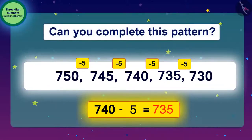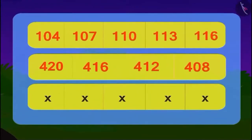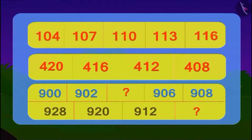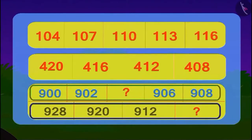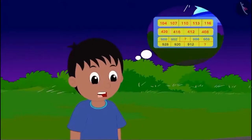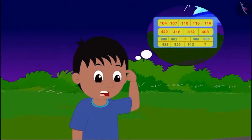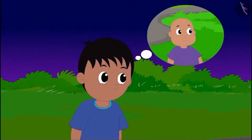Children, could you also identify the pattern? Let us see what is the next code given by the alien. We can see two different number patterns here. This time, the alien showed Raju two number patterns and asked: what is that number which can be written in the empty spaces of both patterns?